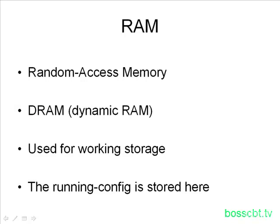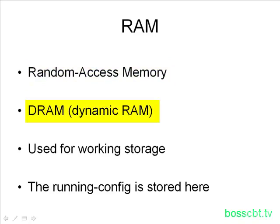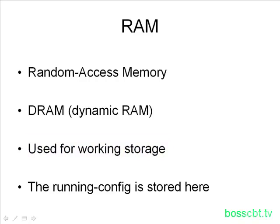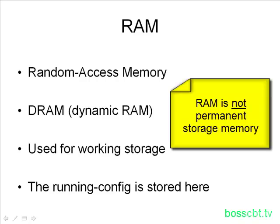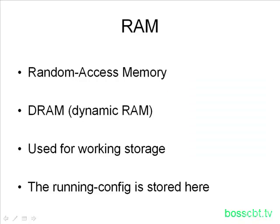The last memory type is RAM, which stands for random access memory — sometimes you'll see it called DRAM, or dynamic random access memory. RAM is used for working storage, similar to a PC. This is what the switch uses to actually operate and function. It's important to note that the running configuration is stored in RAM. When a switch is power cycled or reloaded, the RAM is flushed and everything in it is gone — so it is not permanent storage.